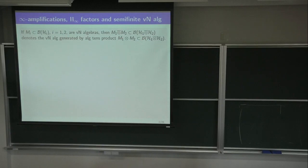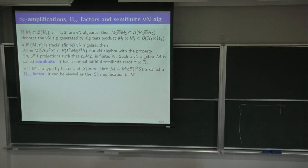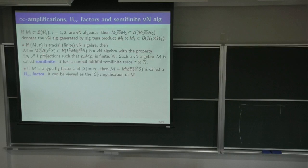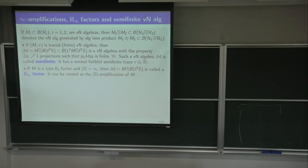Now if you take a finite von Neumann algebra M, and take the tensor product of M with B(H) for some H — specifically L²(S) for some set S — then taking finite rank projections in B(H) tensored with the identity gives projections that are finite when you cut M by these projections. You get finite von Neumann algebras, because it's like taking n by n matrices if the projection is of rank n — like taking n by n matrices over the initial M.